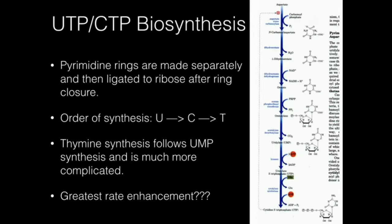ATCase was actually one of the first characterized allosteric enzymes, so it's been very well studied. We're going to have an entire video on its regulation because it's a classic example of allostery. It is the regulated step in this pathway. The product of aspartate transcarbamylase is N-carbamyl aspartate. Through the enzyme dihydroorotase, we cyclize it into dihydroorotate, and then we dehydrogenate it to make orotate.